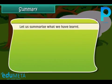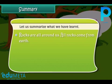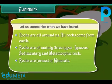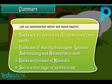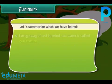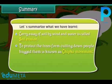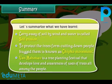Now let us summarize what we have learned. Rocks are all around us. All rocks come from Earth. Rocks are mainly of three types: igneous, sedimentary, and metamorphic. Rocks are formed of minerals. Soil is a thin layer of Earth's crust. Carrying away of soil by wind and water is called soil erosion. People hugged trees to protect them from being felled, and this movement is known as the Chipko Movement. Van Mahotsav is a tree planting festival that develops love and awareness of the uses of trees among the people.